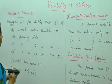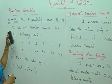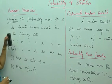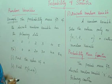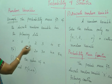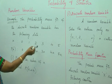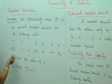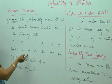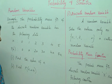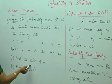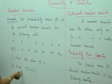This is how they will give you the question: the probability mass function of the discrete random variable has the following data — x values: 0, 1, 2, 3, 4, 5 and p(x) values: 0, a, 2a, 3a, 4a, 5a. We need to find the value of a and then find p(x less than 4).